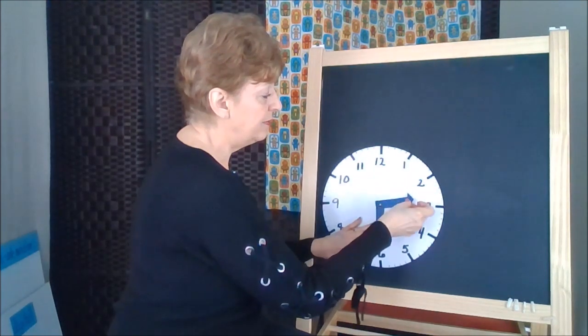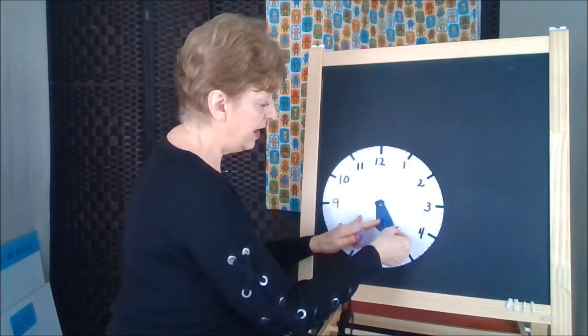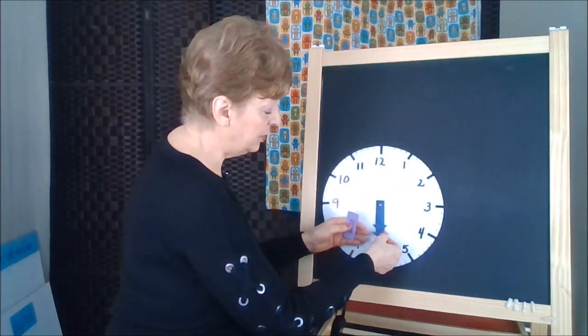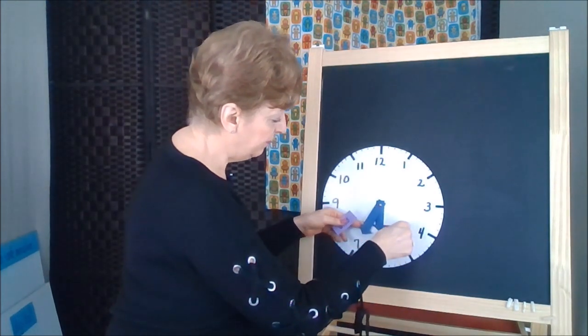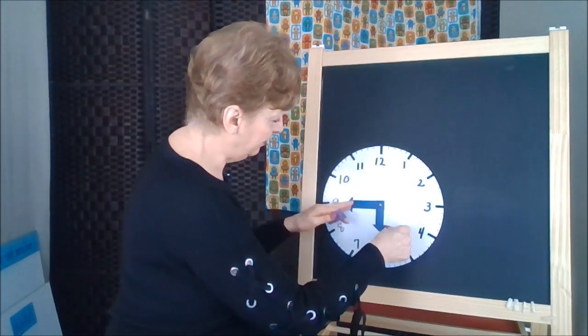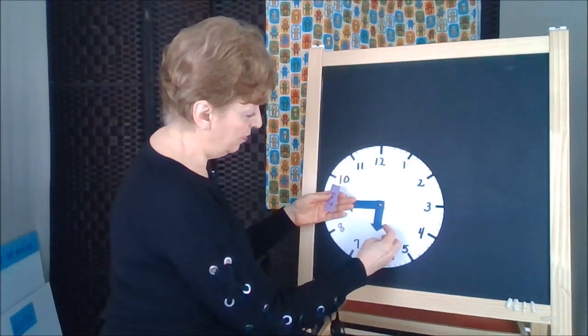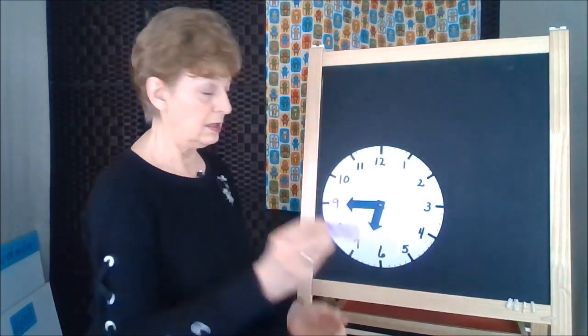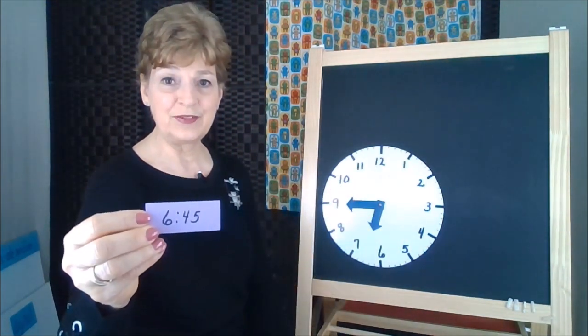5, 10, 15, 20, 25, 30. I'm passing the 30, 35, 40, 45. So you've got to move over in between the 6 and the 7. That would be 6, 45.